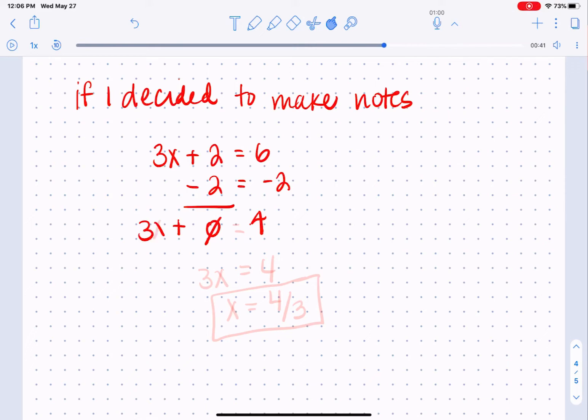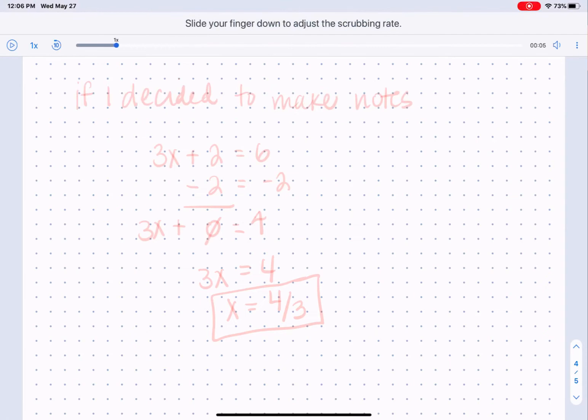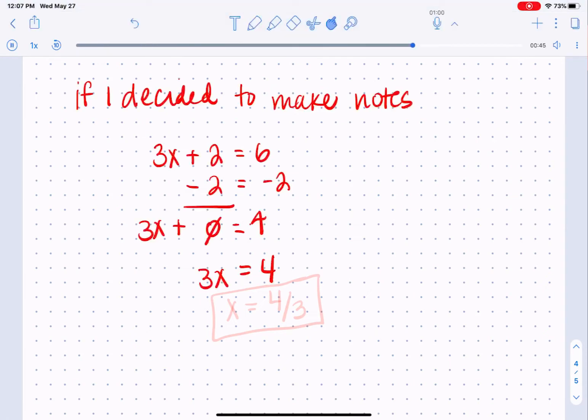And you even have the option to tap on a portion of the screen, and it will jump to that part in the recording. And then x is going to equal four thirds. And there is my answer. Okay. So if I'm done recording,